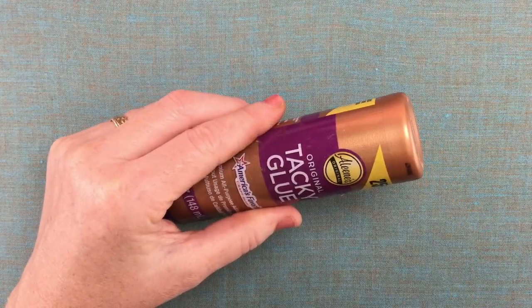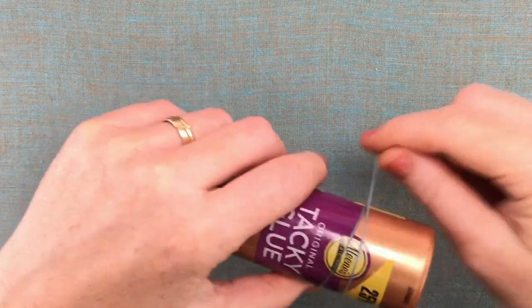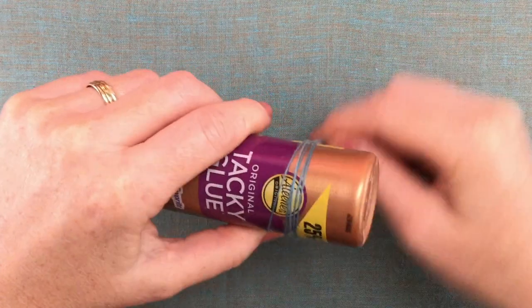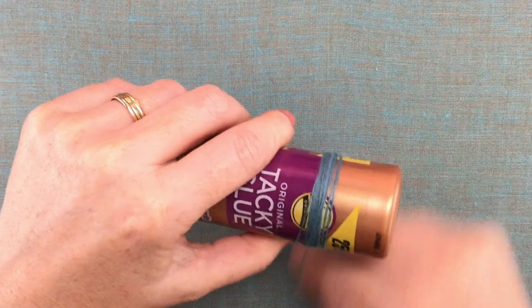Alright, so now we are on to the pom-pom. I know it looks like I didn't mention that we needed tacky glue, but this is just a form to wrap our yarn around.